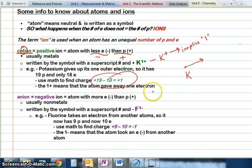Now potassium has 19 protons but only 18 electrons. When we do the math (19 - 18 = +1), we end up with a plus 1 charge. Potassium gave away one electron, so it's positive one.